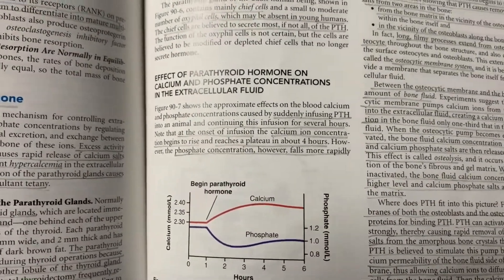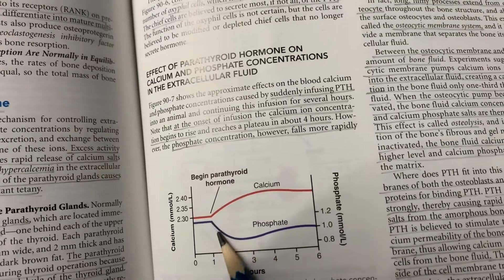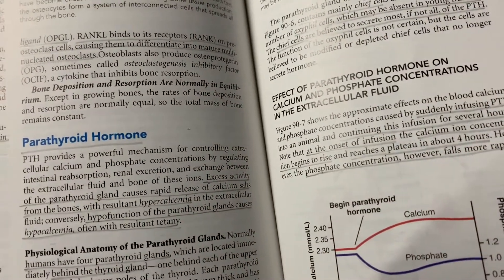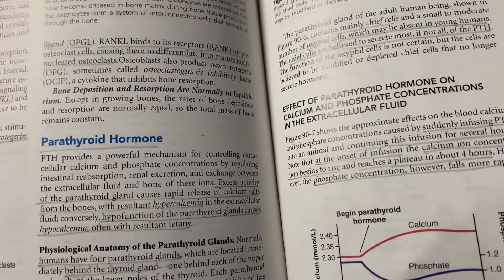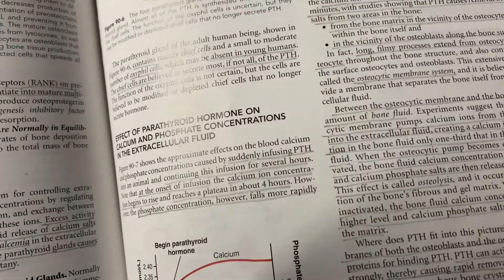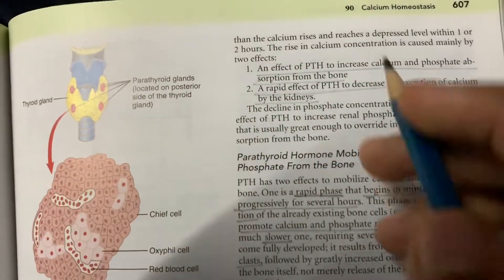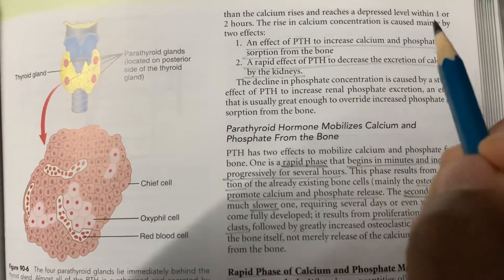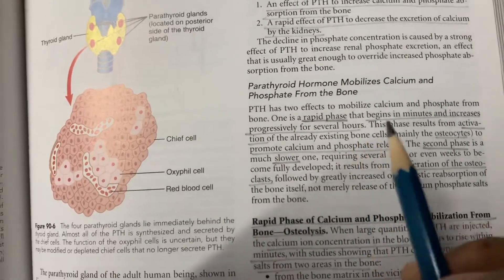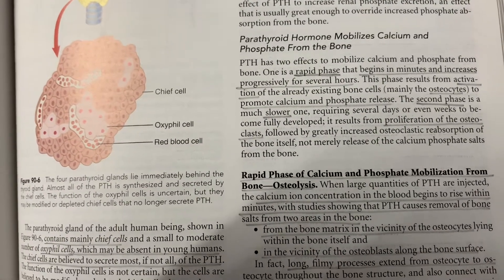If PTH is infused into an animal and continued for several hours, calcium concentration rises to a peak after four hours whereas phosphate concentration decreases. PTH is also called 'phosphatonin' — like calcitonin decreases plasma calcium, PTH decreases plasma phosphate, hence the name. At the bone level it increases phosphate, but otherwise it decreases it. PTH increases calcium and phosphate absorption from bone, decreases excretion of calcium by the kidneys, and increases excretion of phosphate by the kidneys. It mobilizes calcium and phosphate from bone by two phases: a rapid phase beginning within minutes and a slower phase.